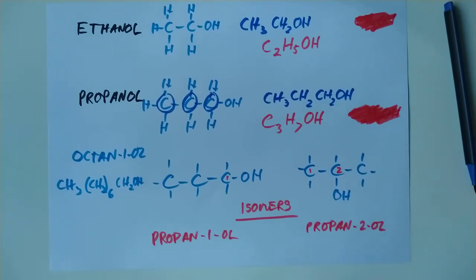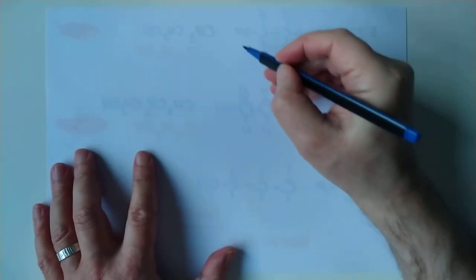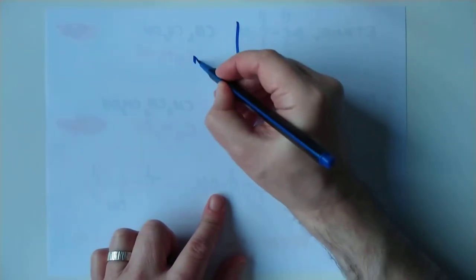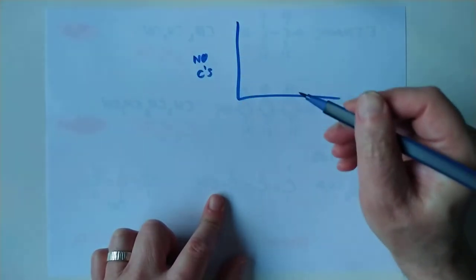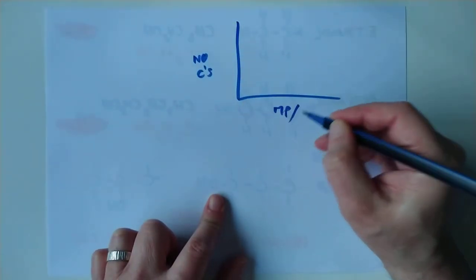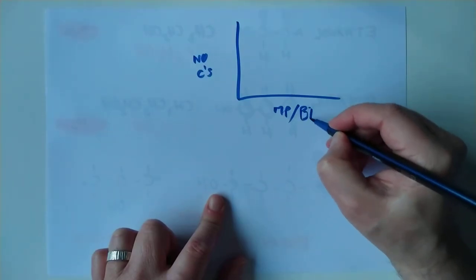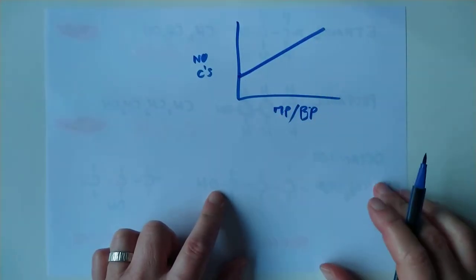A couple of words on the fact that it's a homologous series now. Now the SQA want to remind you that because it is a homologous series, the number of carbons in the molecule affect the melting points and the boiling points. And they actually go sort of up like that.